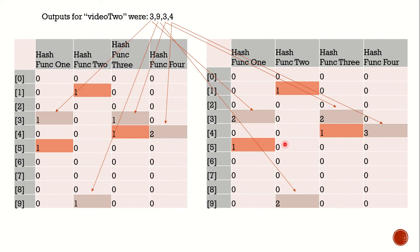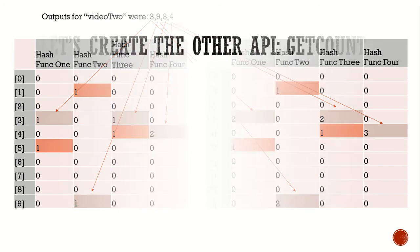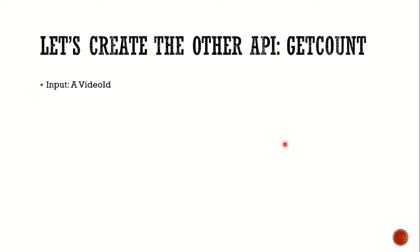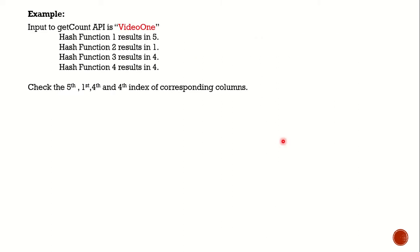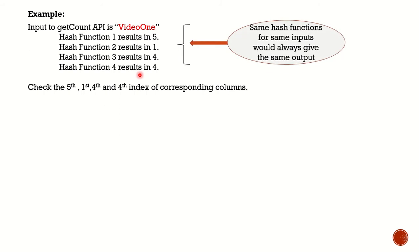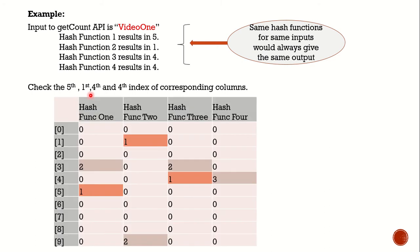We can repeat this process indefinitely. How do we get the count? The input to the getCount API is a simple video ID and the expected output is the view count. For video 1, hash function 1 gives us 5, hash function 2 gives us 1, hash function 3 gives us 4, and hash function 4 gives us 4 — the same outputs as before, because the same hash functions on the same inputs always give the same output. So we check the fifth, first, fourth, and fourth indexes of the corresponding rows, and the values are 1, 1, 1, and 3.